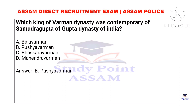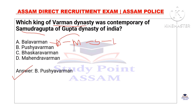Which king of the Brahman dynasty was the contemporary of Samudragupta of the Gupta dynasty of India? The king of the Brahman dynasty was the contemporary of Samudragupta of the Gupta dynasty. His name was of the Burman dynasty, and the name is Stunp. The name of the Burman is Loisthan.